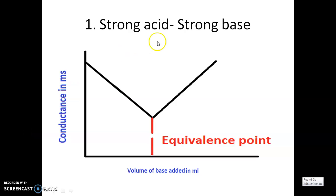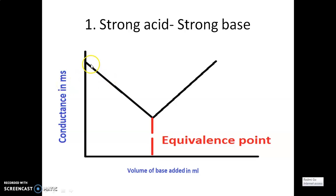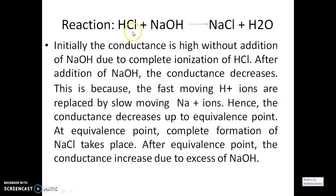The first type is strong acid versus strong base. The graph has volume of base added on the x-axis and conductance in Siemens or millisiemens on the y-axis. The equivalence point is marked on the graph. The reaction is: HCl plus NaOH gives NaCl and water.